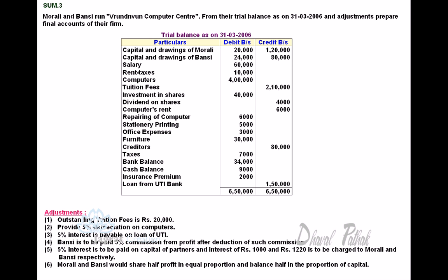In the Trial Balance, you are given Capital and Drawings of Morley, Capital and Drawings of Bunsi, Salary, Rent and Taxes, Computers, Tuition Fee, Investment in Shares, Dividend on Shares, Computers Rent as an income, Repairs of Computer, Stationery and Printing, Office Expenses, Furniture, Creditors, Taxes, Bank Balance, Cash Balance, Insurance Premium 2,000, and Loan from UTI Bank 1,50,000.